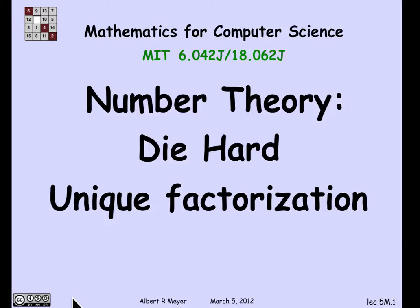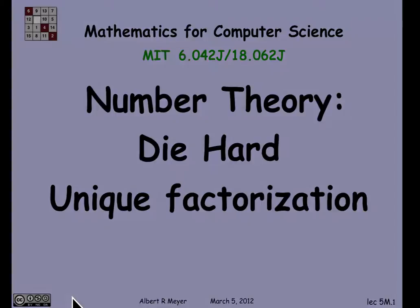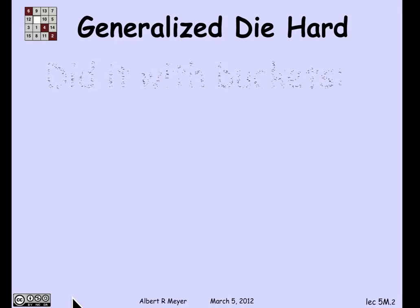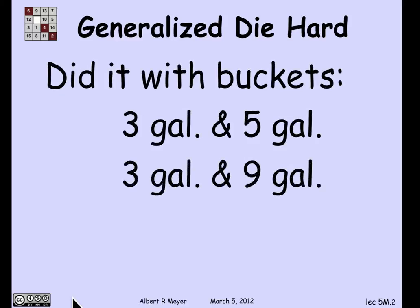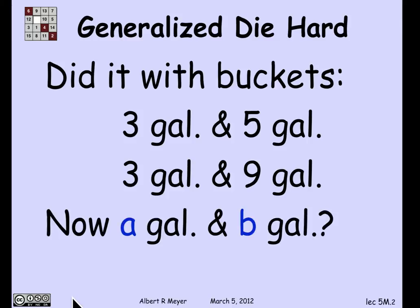We're ready to put together the facts that the GCD is a linear combination to prove two cool results — one fun and the other important and serious. Let's begin with the Die Hard example. We looked at the Die Hard state machine and figured out the behavior with jugs of size 3 and 5 gallons, and also with jugs of size 3 and 6 gallons. Let's look at the general case now.